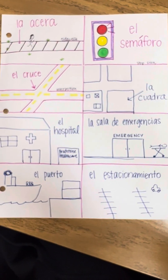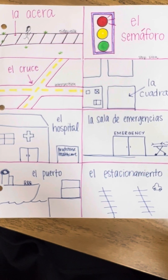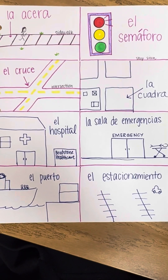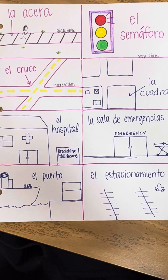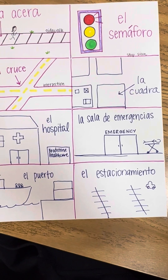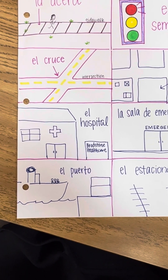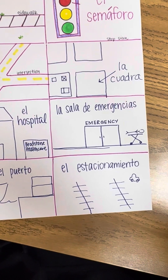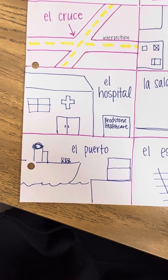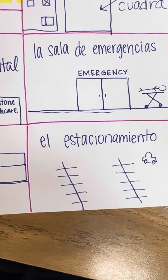Okay, so from the top, repeat after me. The word for sidewalk is la acera. The word for stoplight is el semáforo. The word for intersection is el cruce. The word for a city block is la cuadra. The hospital is el hospital. The emergency room is la sala de emergencias. A port is el puerto. And the parking lot is el estacionamiento.